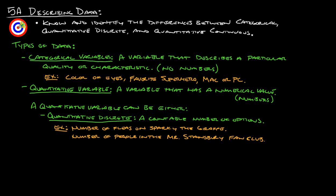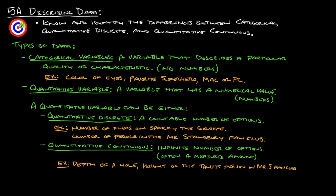Another type of quantitative variable is quantitative continuous. This would be an infinite number of options. The way to usually remember this is that it's often some kind of measured amount. So depth of a hole would be considered quantitative continuous. Now, a lot of people have a hard time with this because the thing is it really depends on how accurate you measure the depth of the hole to.